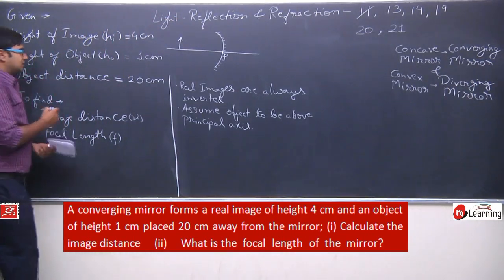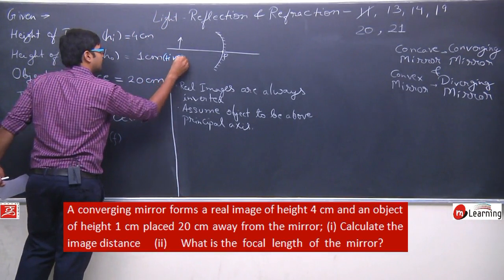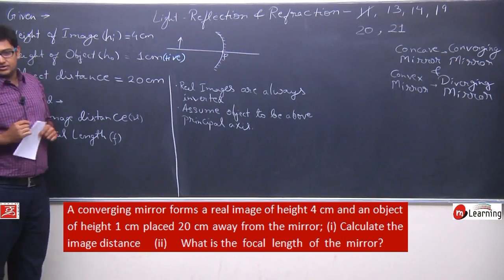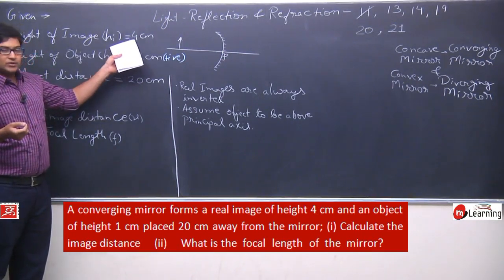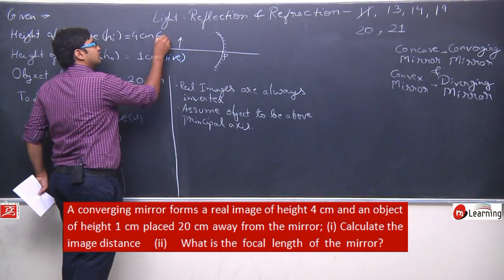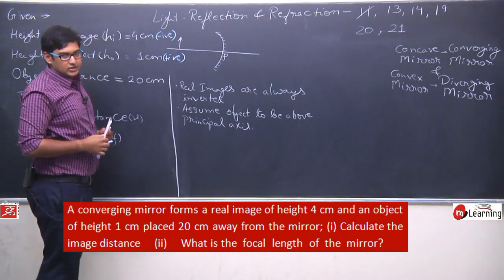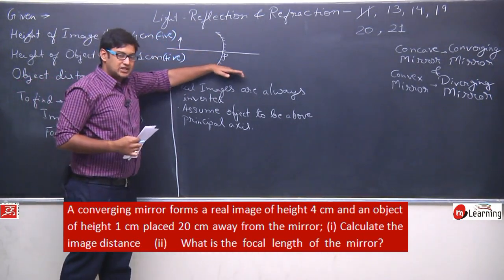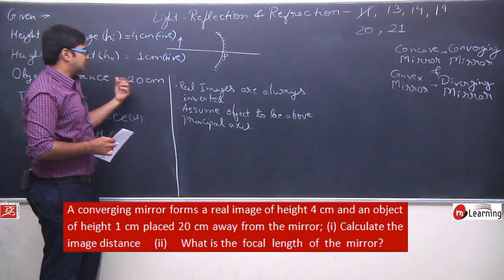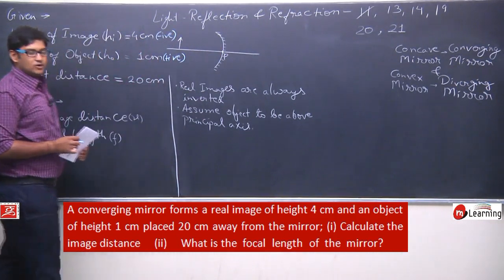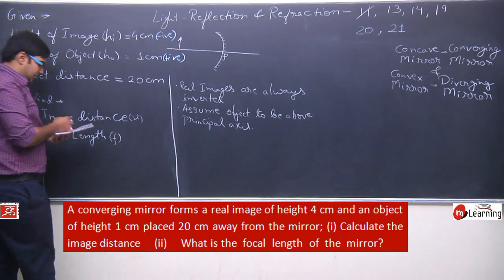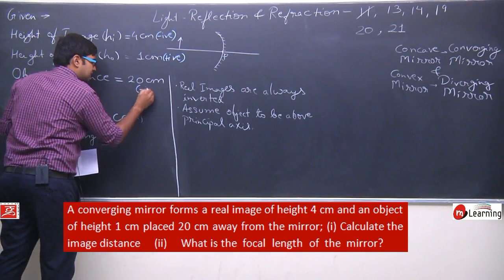Distance of object: the object is on the left side from the pole, so the object distance is negative. Now we have written all the given data, understood all assumptions, and listed what we need to find. Let us now solve this question.